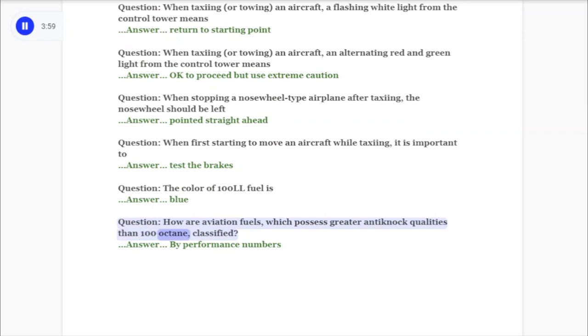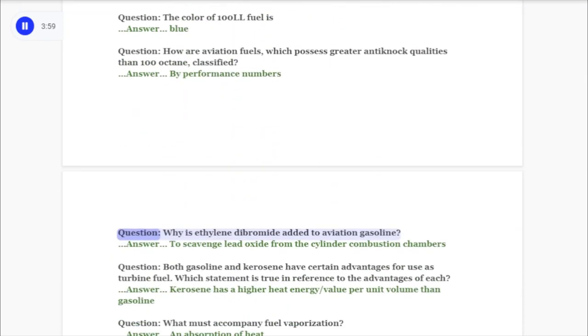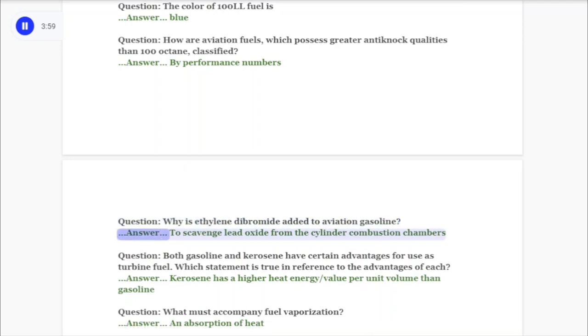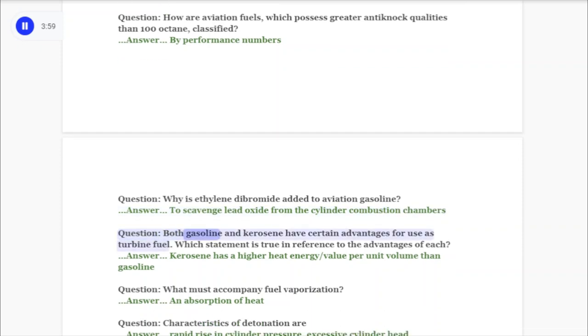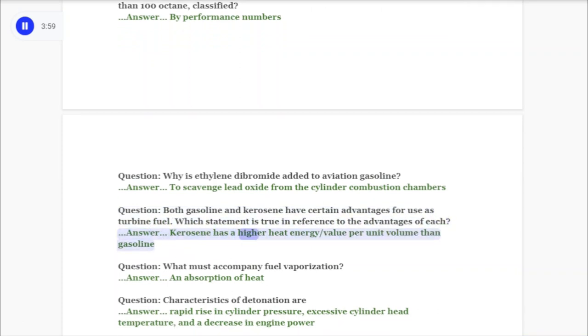Question: How are aviation fuels which possess greater anti-knock qualities than 100 octane classified? Answer: By performance numbers. Question: Why is ethylene dibromide added to aviation gasoline? Answer: To scavenge lead oxide from the cylinder combustion chambers. Question: Both gasoline and kerosene have certain advantages for use as turbine fuel. Which statement is true in reference to the advantages of each? Answer: Kerosene has a higher heat energy/value per unit volume than gasoline.